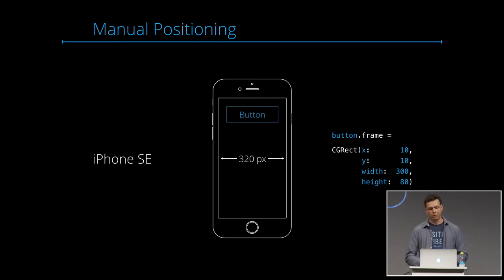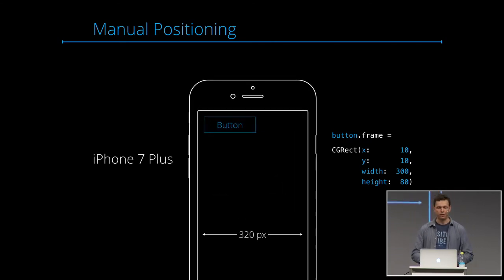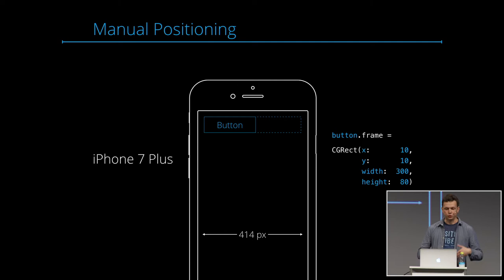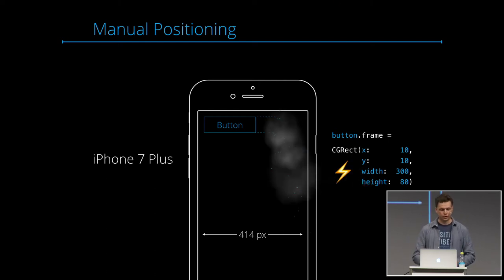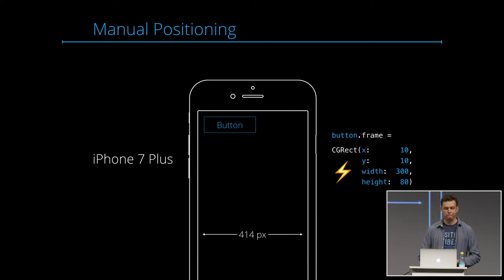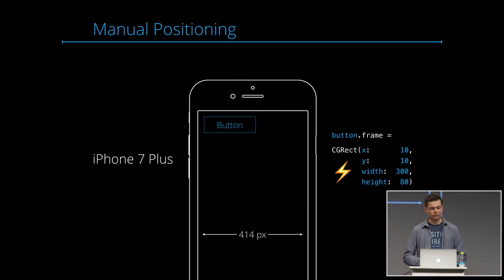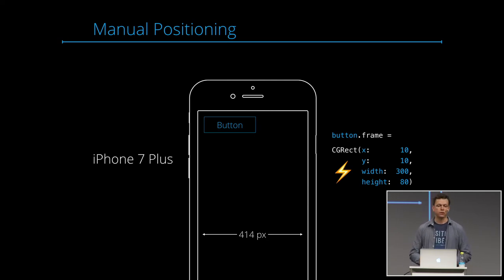With the manual positioning approach, when we have a different device, this approach doesn't work anymore. What we actually want is equal horizontal padding to the screen on both sides, but manual positioning doesn't support that. We would need to specify a different frame for each screen size, which is really tedious and not scalable at all.